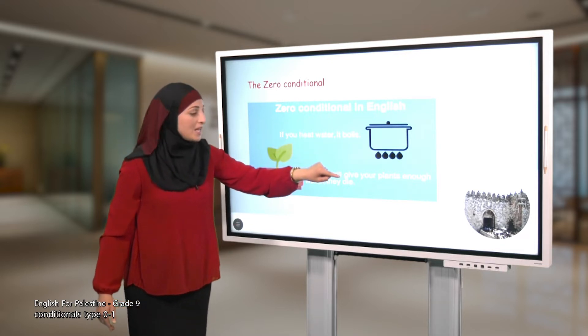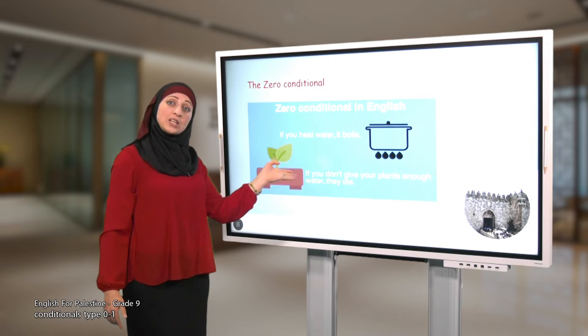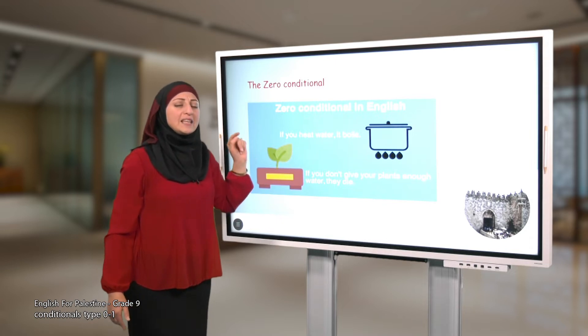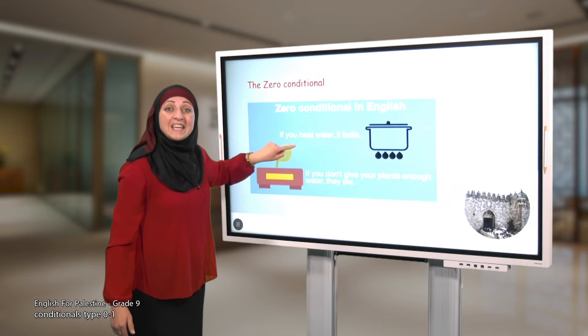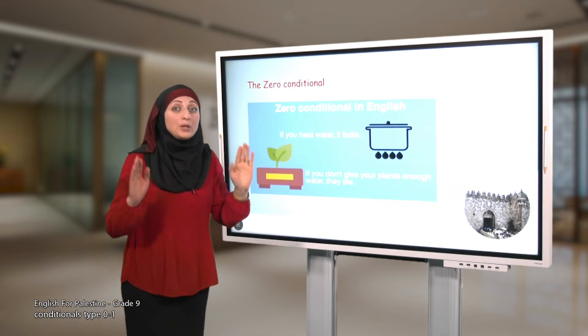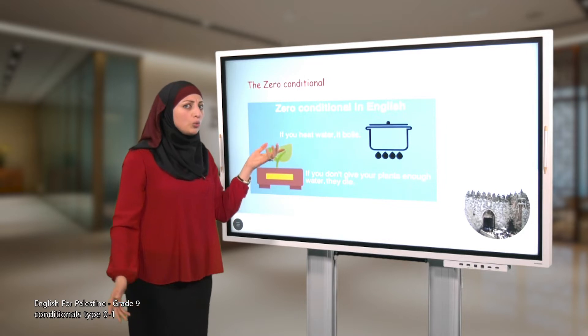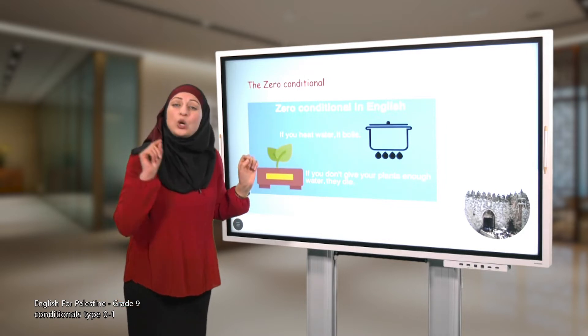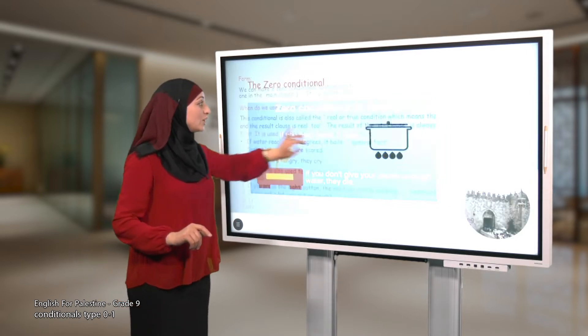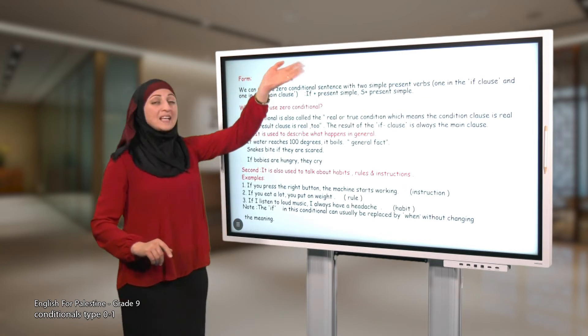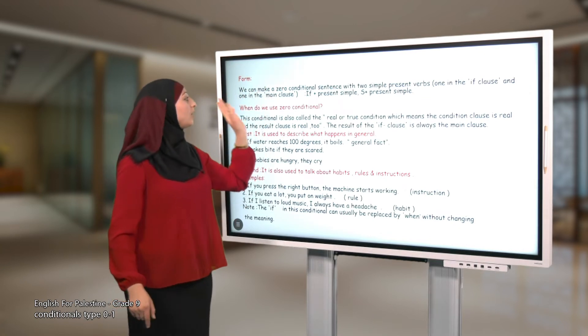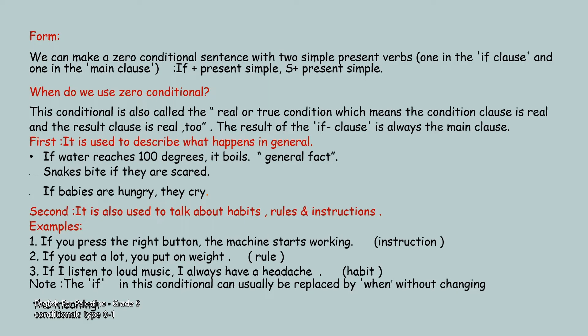Look at the verbs here in the if clause and in the main clause. If you concentrate, you will decide that the verb here, 'heat', is simple present, and in the main clause 'boils' - what is this? It is also simple present. So we can make zero conditional using this rule: if plus present simple in the if clause, comma, subject plus present simple in the main clause.